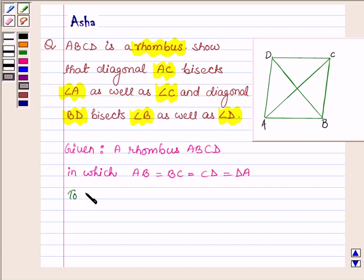And we have to prove first the diagonal AC bisects angle A and C. That is, these two angles are equal and these two angles are equal. Now first we have to prove angle DAC is equal to angle BAC, second angle BCA is equal to angle DCA.